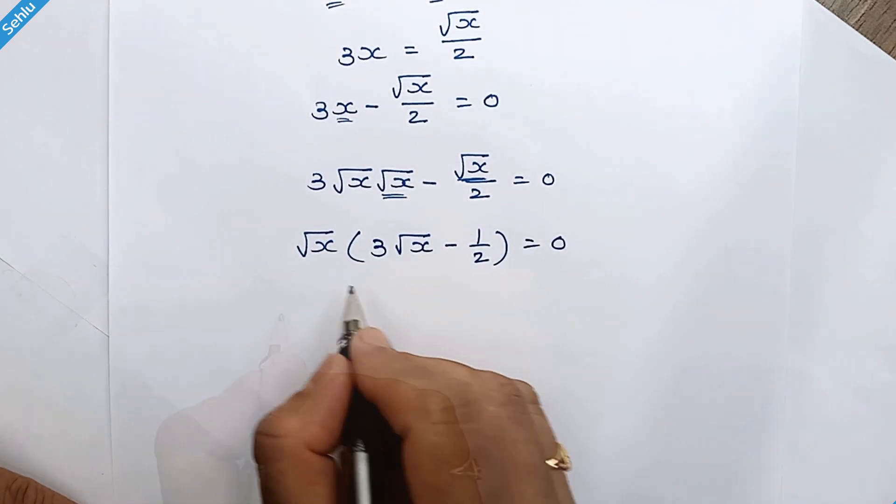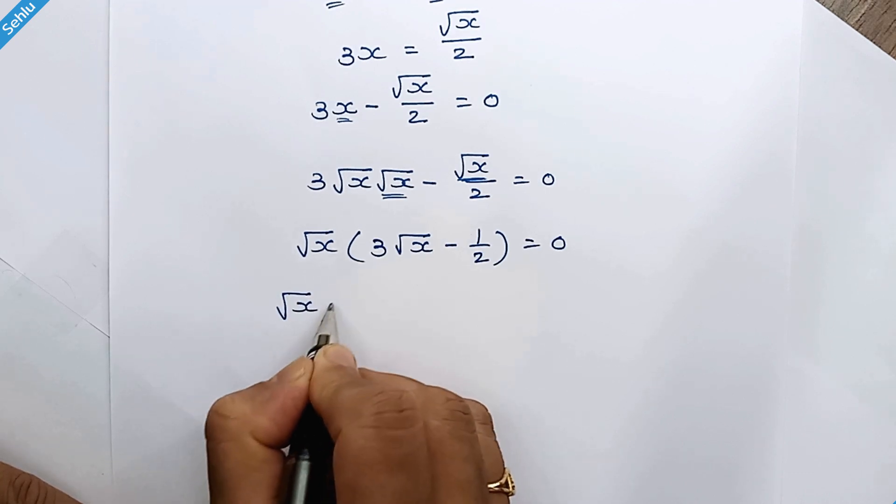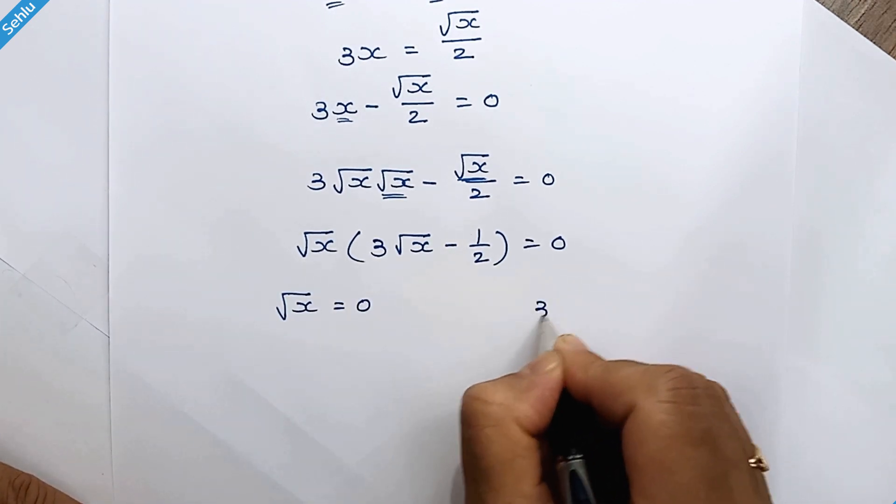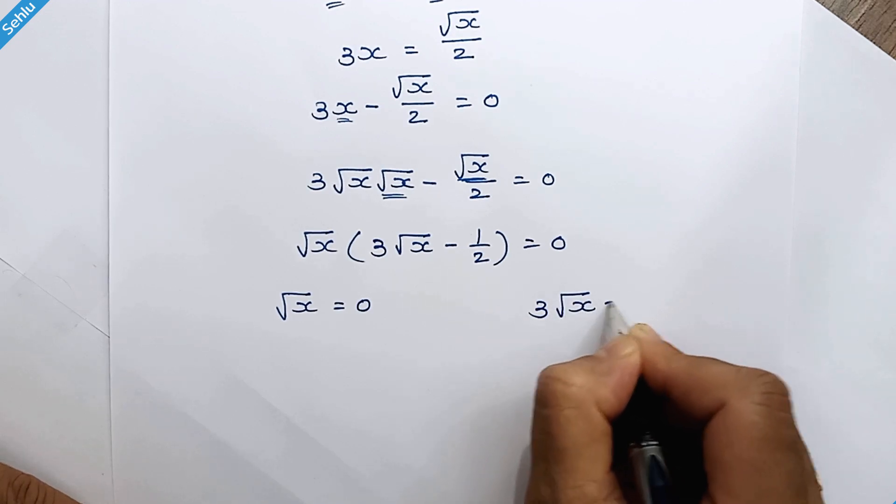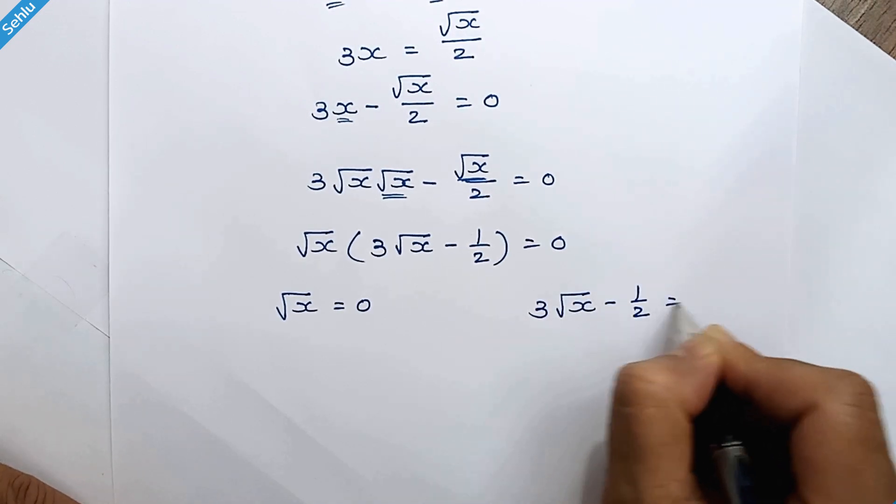So we can factor out square root of x. Now we can say square root of x is equal to 0 or 3 times square root of x minus 1 over 2 is equal to 0.